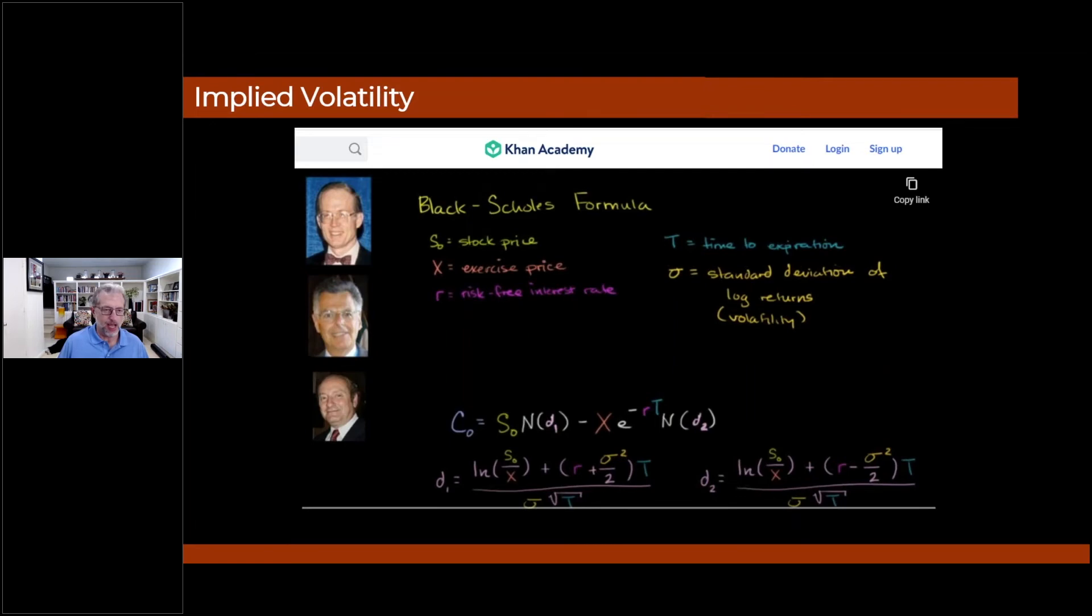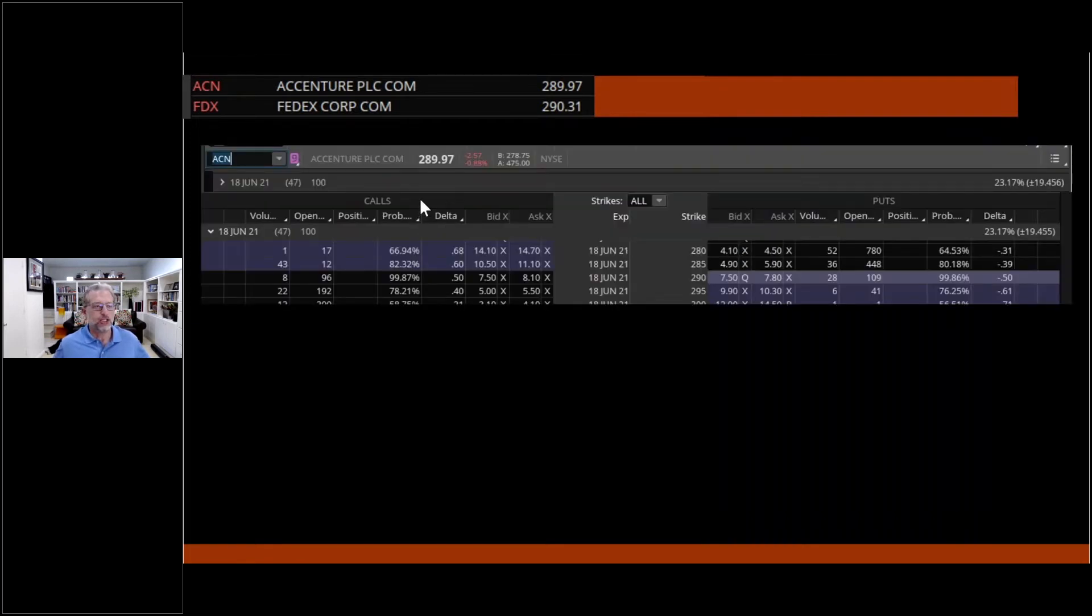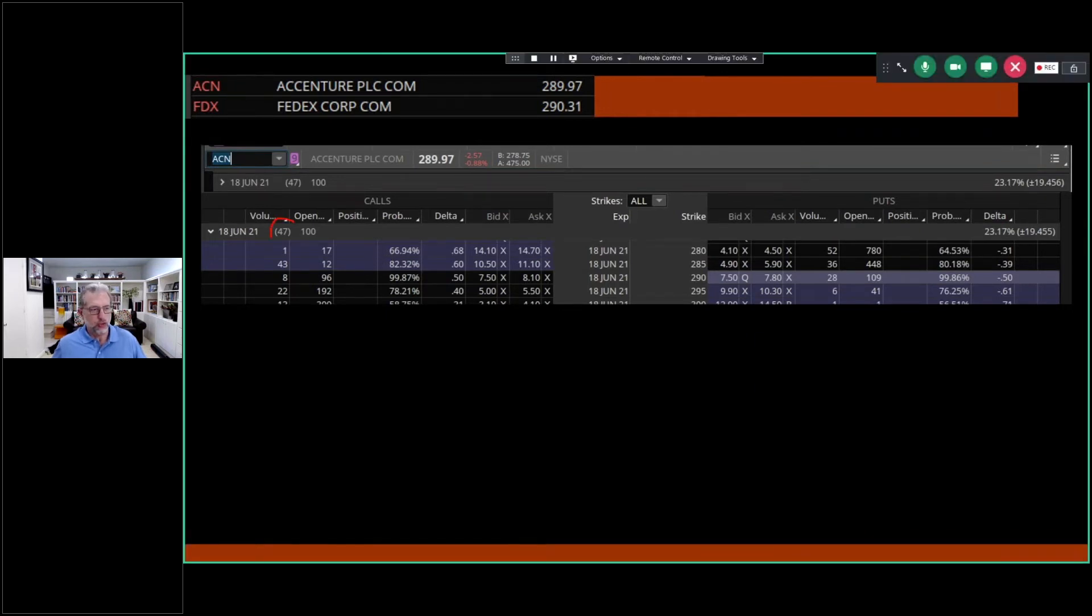So if that's clear as mud, I apologize, but I thought I'd give you kind of way down into the bowels of implied volatility. And for my engineers and statisticians, if I'm butchering it, I'm sorry, but this is the Ernie Rapp method of explaining it. So now let's look for it in kind of real terms. Up there in the left-hand corner, I pulled these off the Thinkorswim or Tastyworks earlier today. These were the closing prices of Accenture and FedEx, $289.97, $290.31. So essentially the same price, within 34 cents of each other. So now let's take a look at Accenture, and we are looking at the June, 47 days to go, implied volatility 23.7%, with an expected move of 19.45.